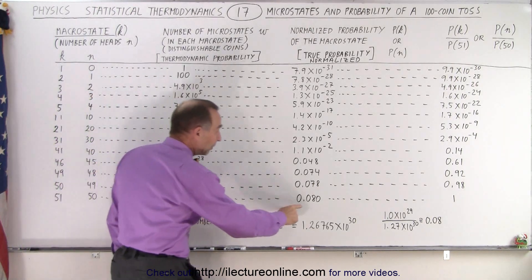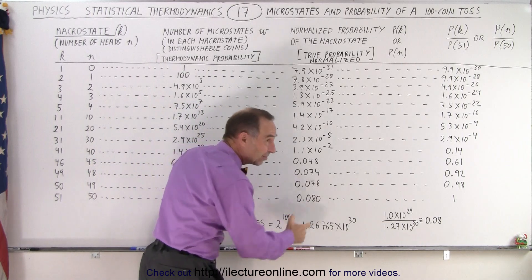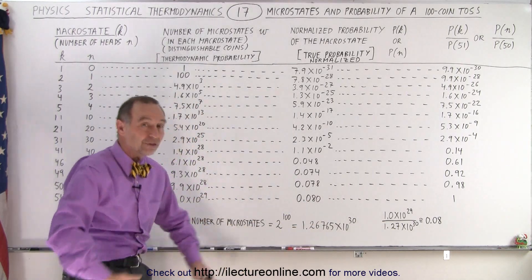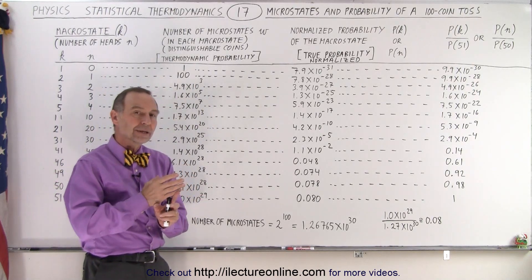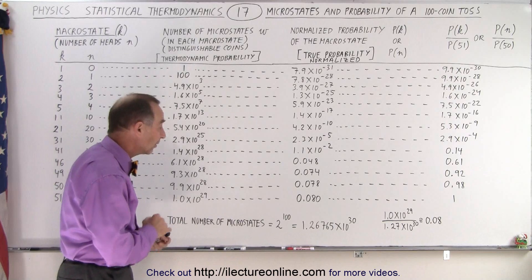which means that the most probable case is where 50 coins are heads and 50 coins are tails. And of course, that is a probability of about 0.08, about 8% of the time when you take 100 coins and toss them up and they're all distinguishable, that you'll have a case where 50 will be heads and 50 will be tails.